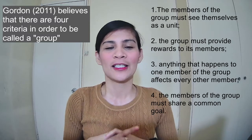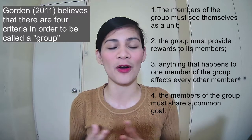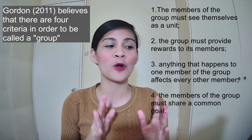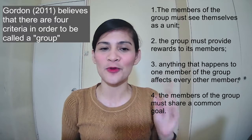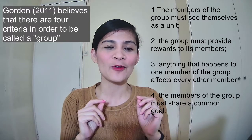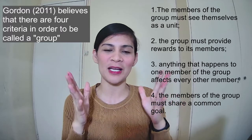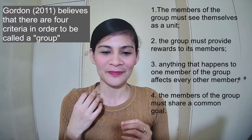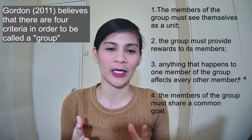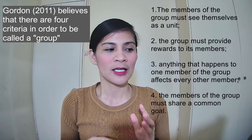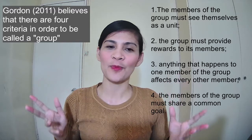Rewards make you feel that you are part of the group's success. The third criteria is that anything that happens to one member of the group affects every other member. If something happens to one person but the others are unaffected, it cannot be called a group according to Gordon. The fourth criteria is that members should share a common goal — everyone in the group must have the same direction and plan.